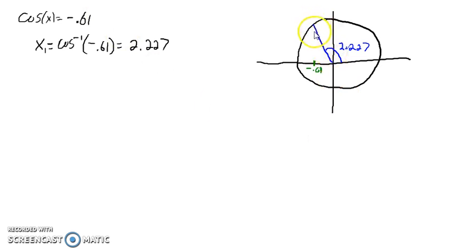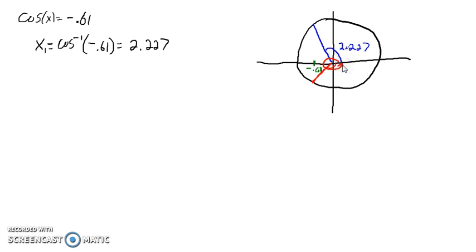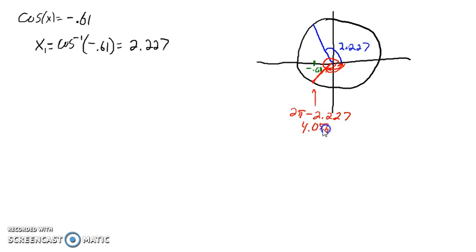Now our second angle is going to have the same cosine value. We can notice that this distance is the same as the first angle's distance, except it's in the opposite direction, so this is also going to be 2.227. We can think of this as going all the way around and then backwards by 2.227 — so 2π minus 2.227 — and that gives us the angle 4.056. That is one way to describe our second solution.